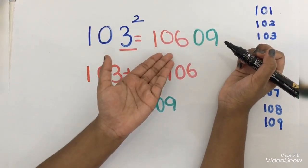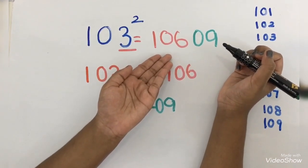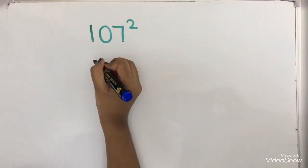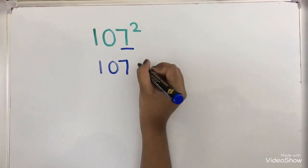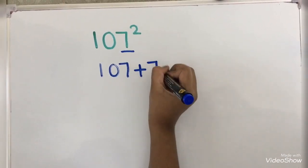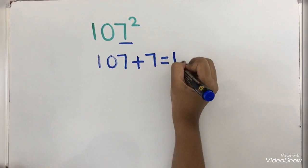Come on, let's write the number here: 107. Let's do the ones digit. The answer is 114.